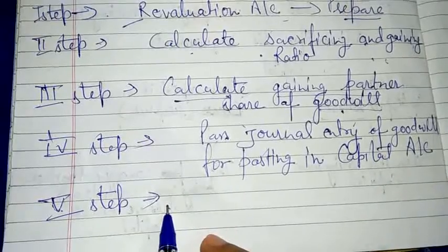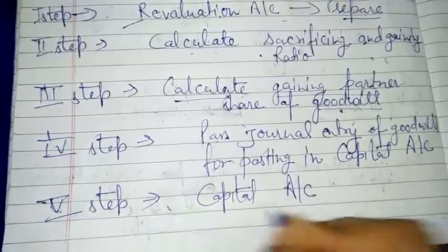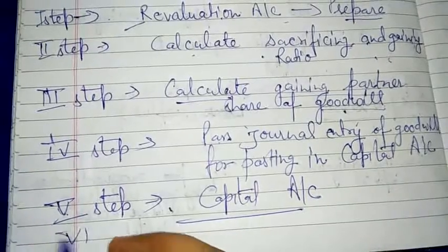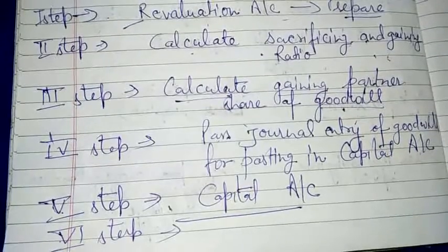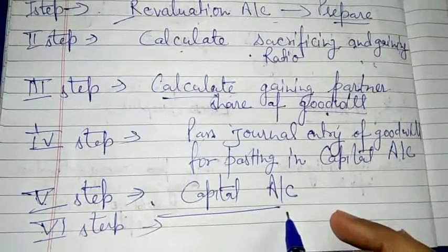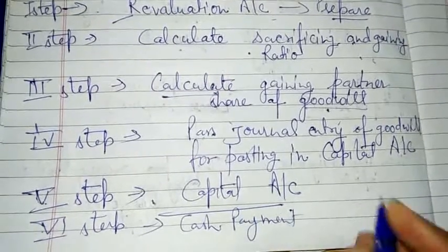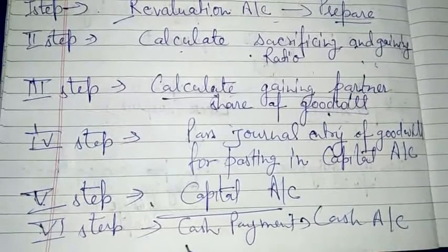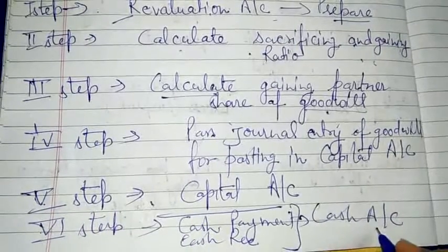Fifth step: prepare the Capital Account. Capital account बनाने के बाद, sixth step में, अगर cash payment हो रही है, तो cash account बनाना है — whether cash is being received or paid, in that condition you prepare the cash or bank account as well.